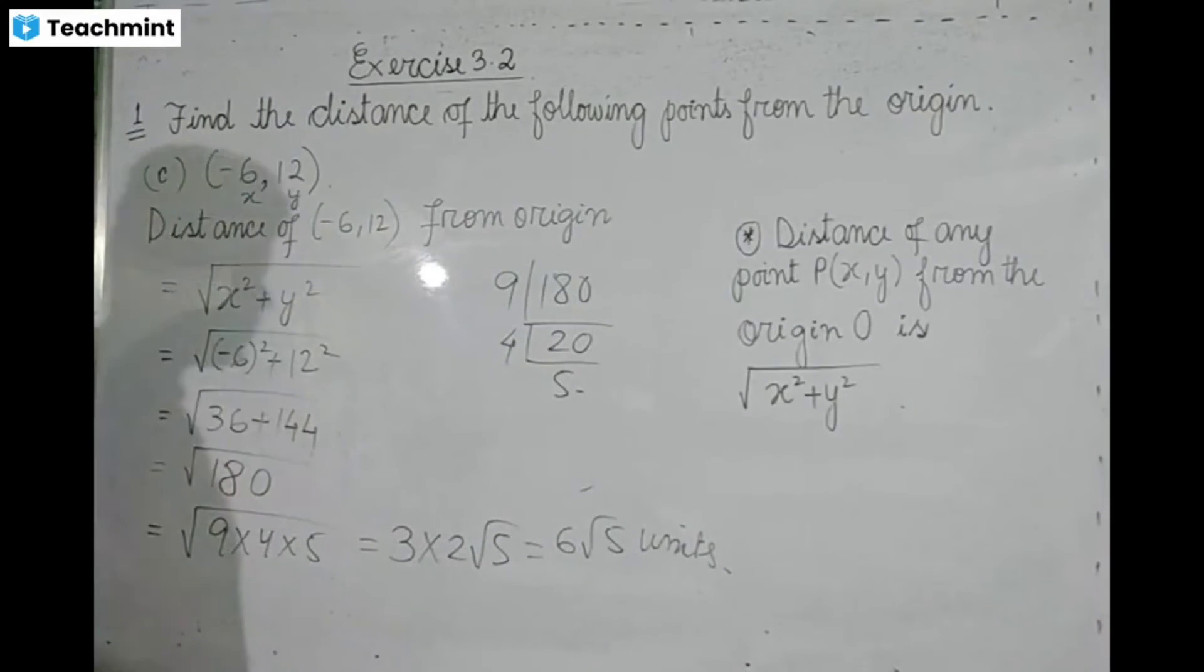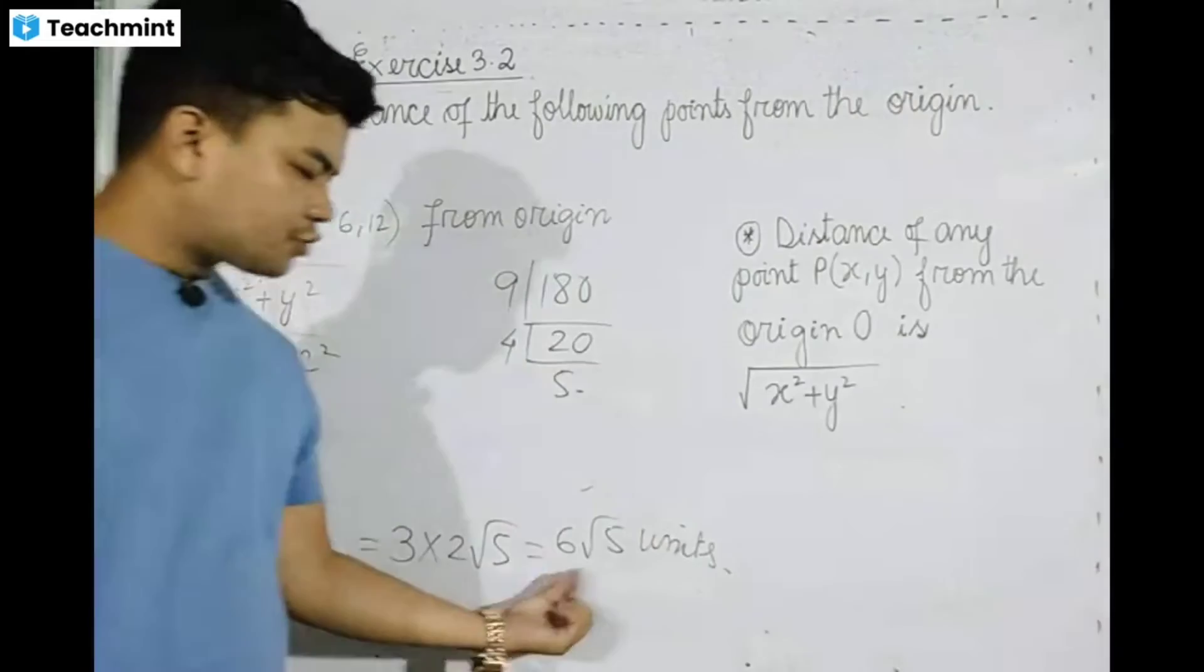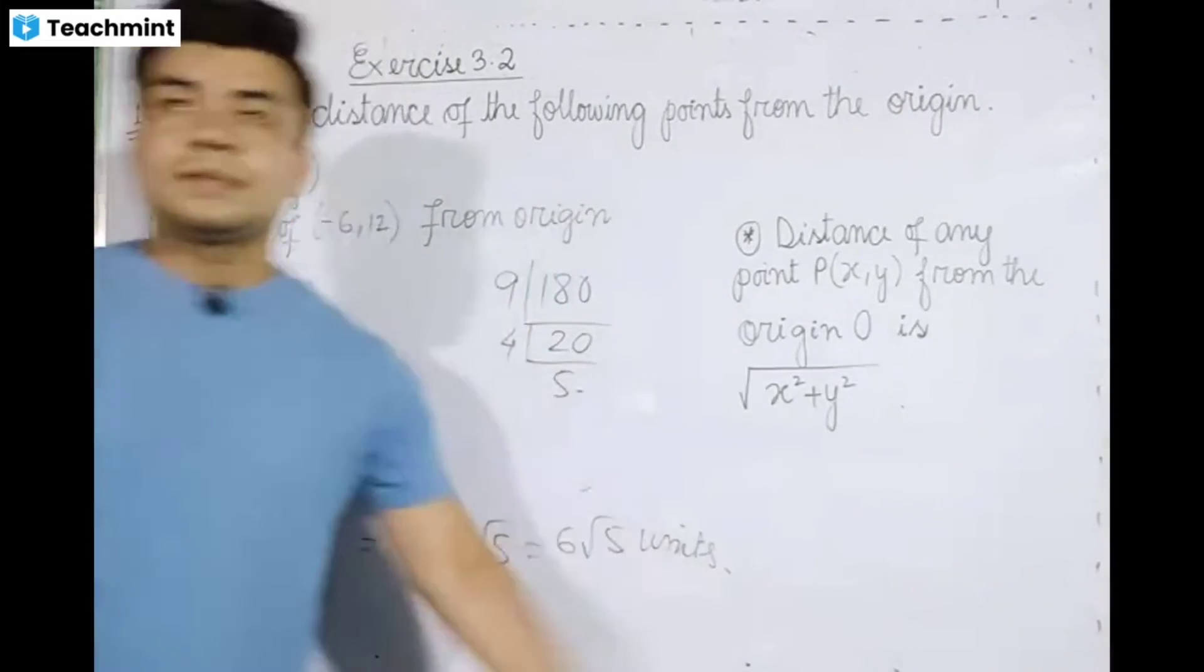As you can do the number of 6 minus 6, 12. So the number of 6 and the value is 6 to 5 units. See you later.